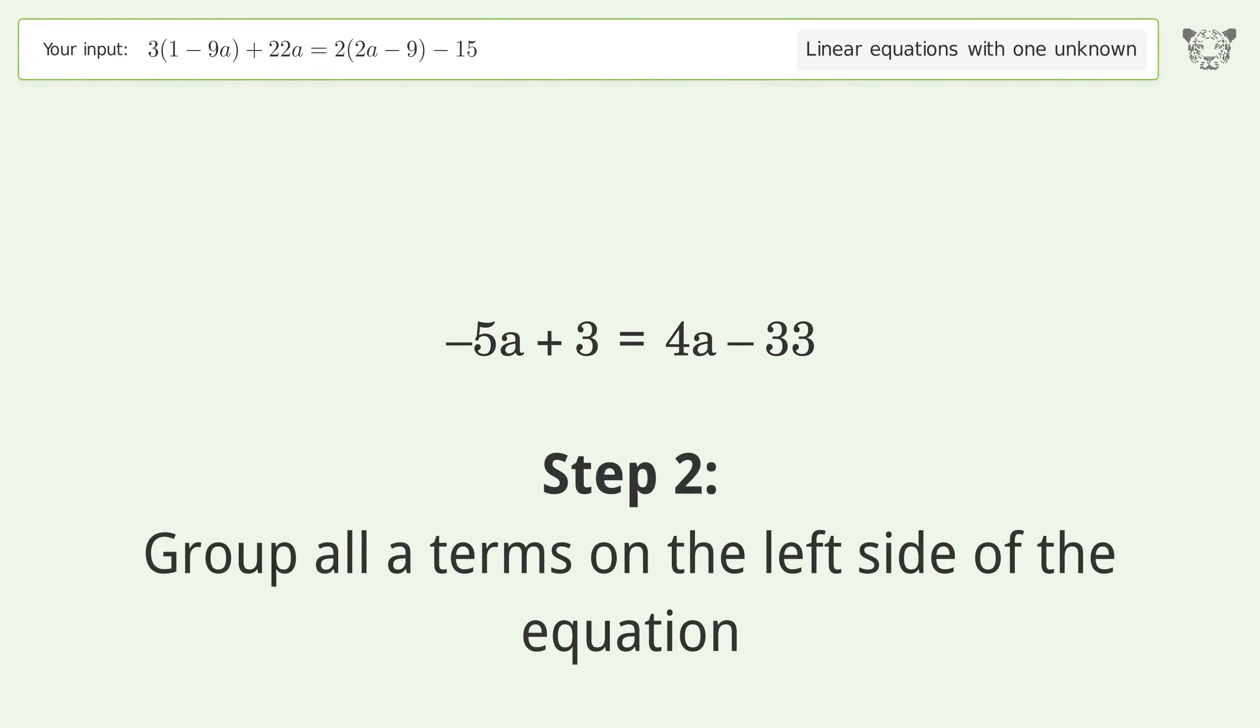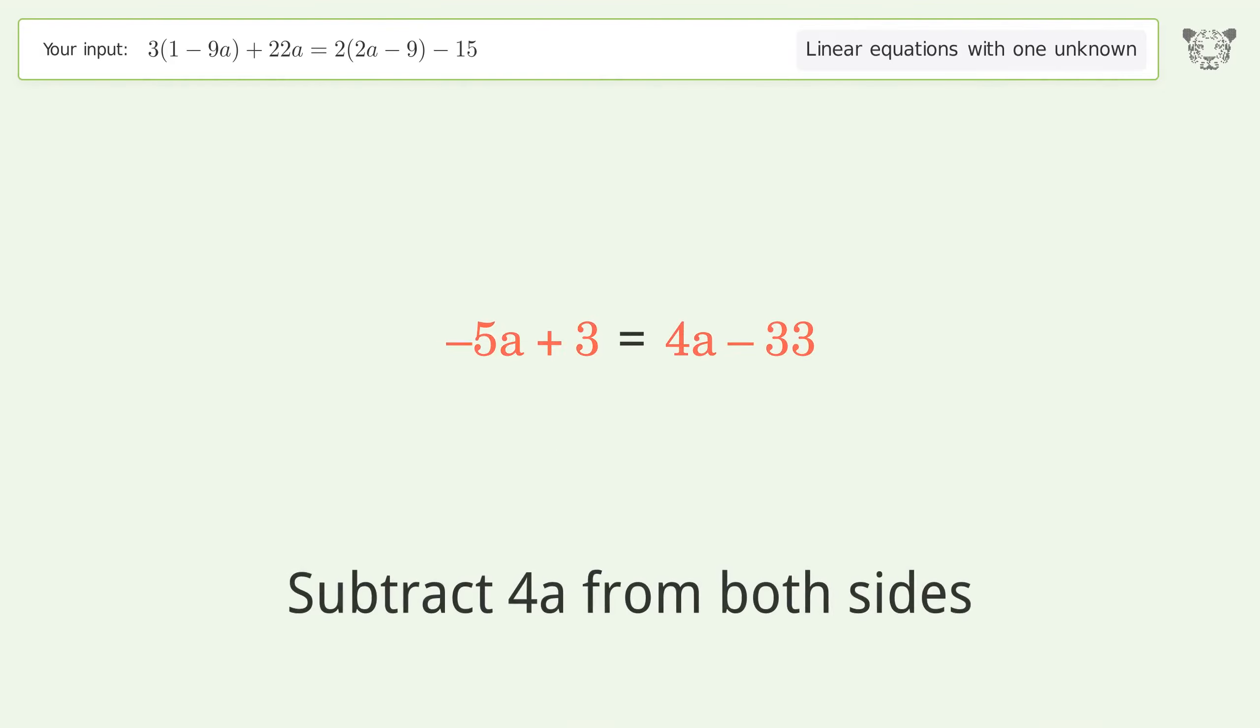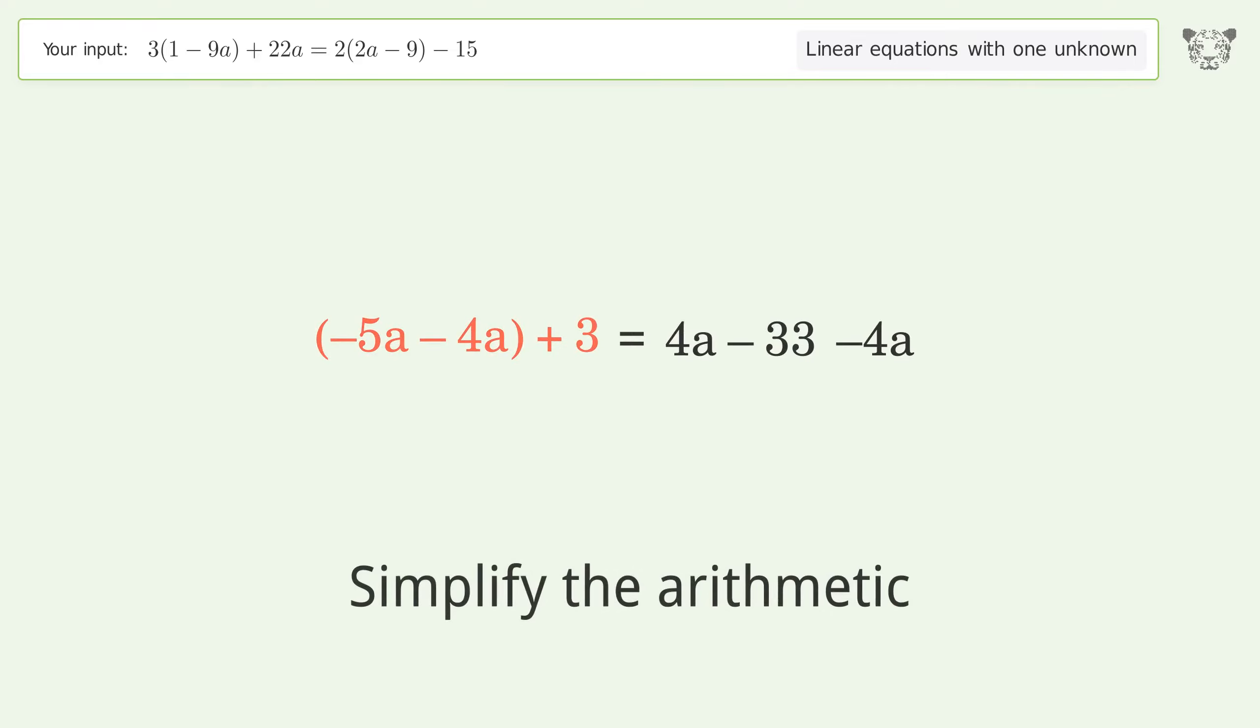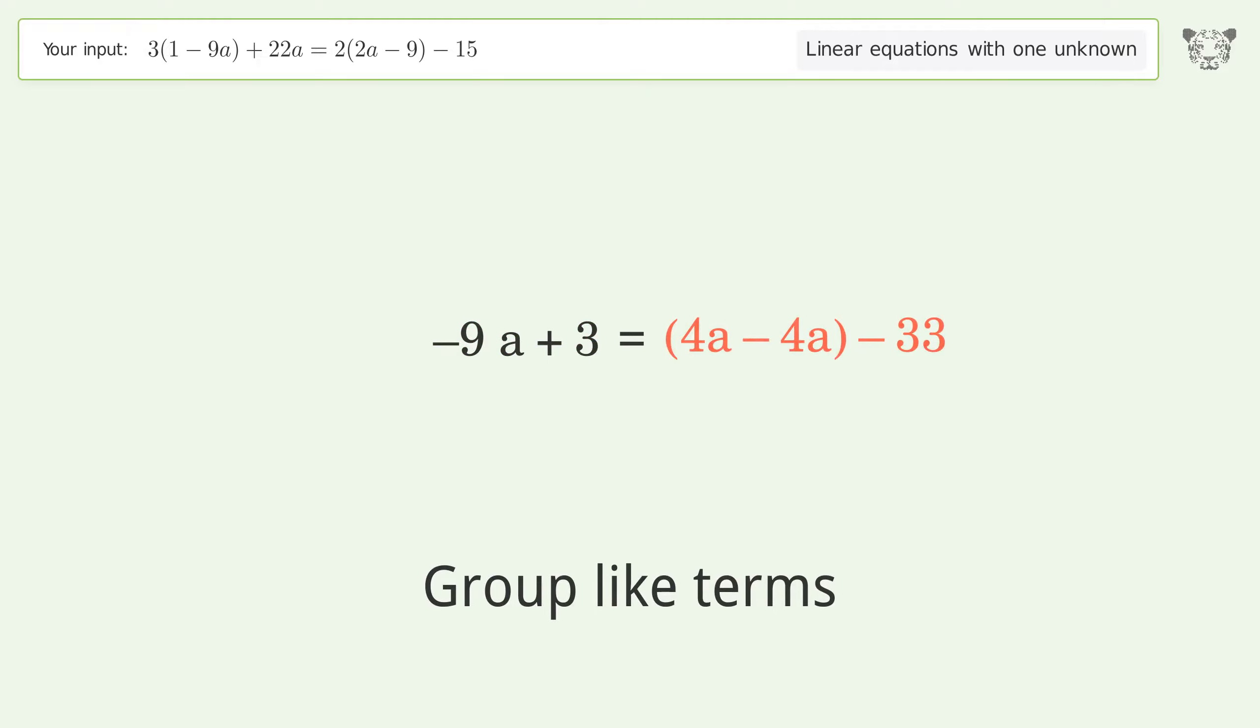Group all a terms on the left side of the equation. Subtract 4a from both sides. Group like terms. Simplify the arithmetic. Group like terms, simplify the arithmetic.